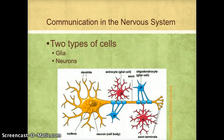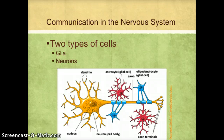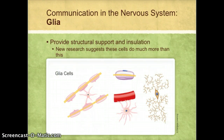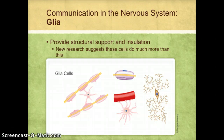The nervous system is made up of two different types of cells: the glial cells and the neurons. In this picture, the neuron is the yellow cell and different types of glial cells are represented by the red and the blue. Most of what we know about the glial cells is that their primary function seems to be to provide structural support and insulation to the neurons in the nervous system.